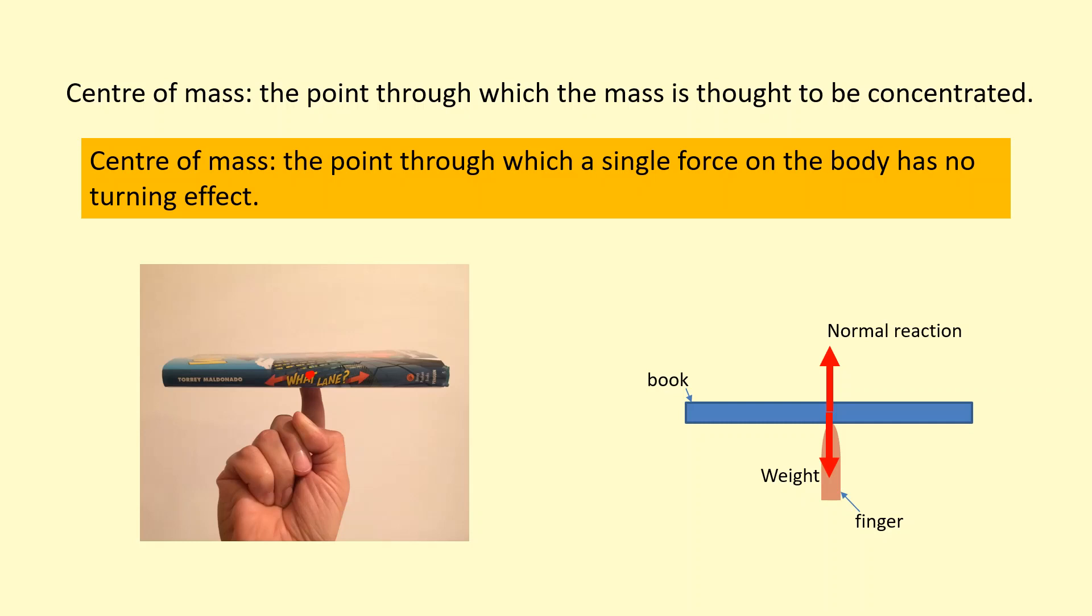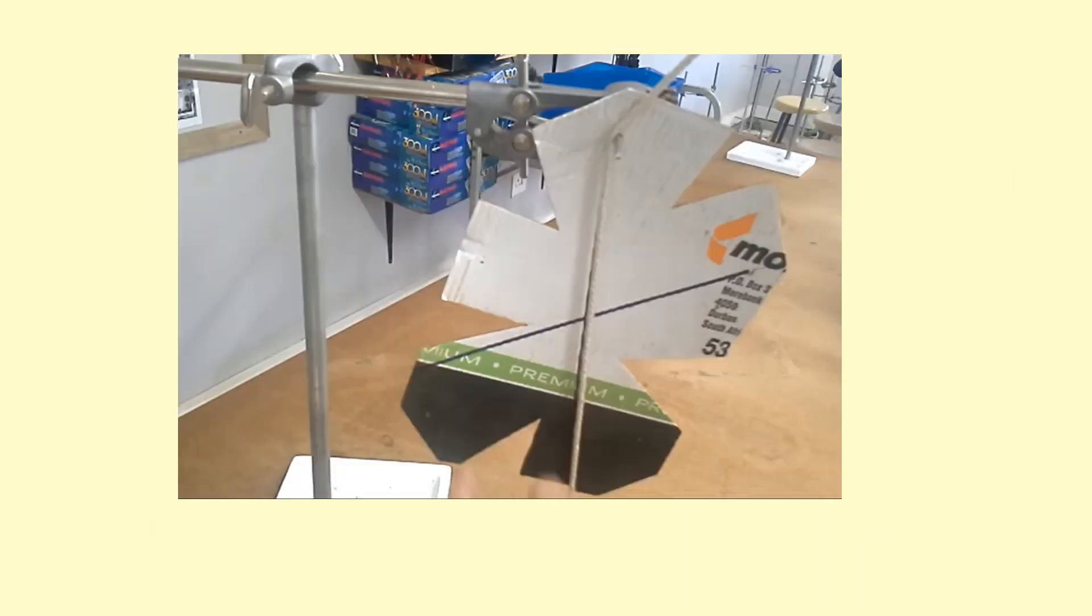There won't be any turning effects, the forces cancel, and it'll be in equilibrium. Okay, so here's a practical that you can use to find the central mass of irregular shaped objects. As you can see with this object here, this card which has random shapes cut out of it, it's irregular because the lines of symmetry aren't obvious.